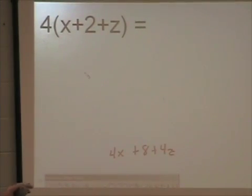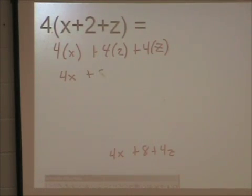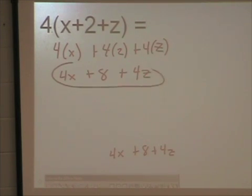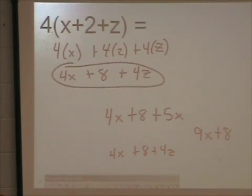On this problem, the procedure's the same, even though there are three terms inside the parentheses. 4 times x plus 4 times 2 plus 4 times z. Now, 4 times x is 4x, 4 times 2 is 8, 4 times z is 4z. This is your answer. Can I combine anything that's there? No. Now, what if my answer was 4x plus 8 plus 5x? What could I combine? 4x and 5x, which is 9x. So my answer would be 9x plus 8. But that's only if I have something I can combine.